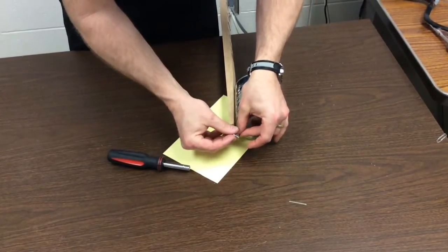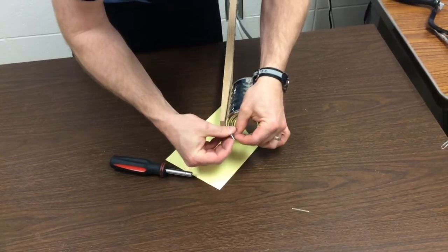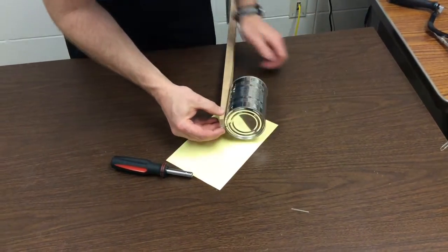We're then going to take the screw, put it through our loop, and then screw it into the end of the can.